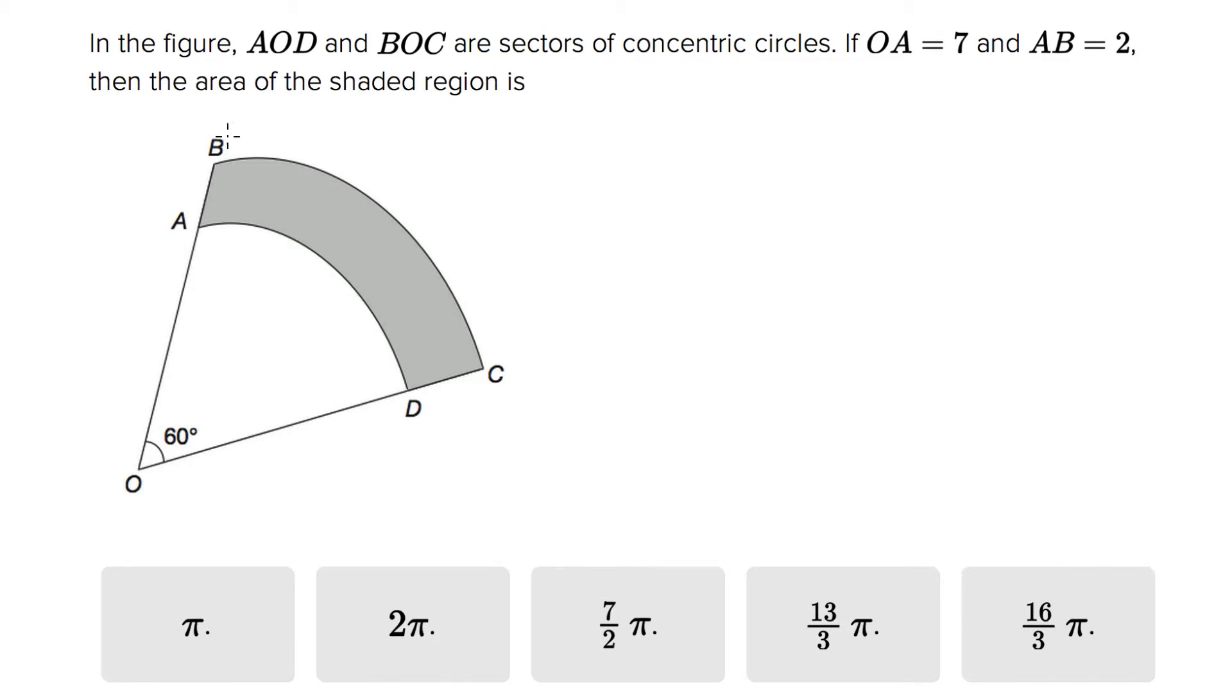This is the real Tom Rose and we're trying to calculate the area of a shaded region. We're told that this region is part of two concentric circles. AOD is a sector of a circle and so is BOC. What we can do is figure out the area of this whole big pie piece and subtract the area of the smaller pie piece.